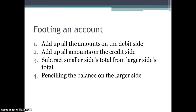Now let's look at the process of how you foot an individual ledger account. It's a four-step process: first, add up all the amounts on the debit side; then add up all the amounts on the credit side; third, subtract the smaller side from the larger side; and fourth, pencil in the balance on the larger side.